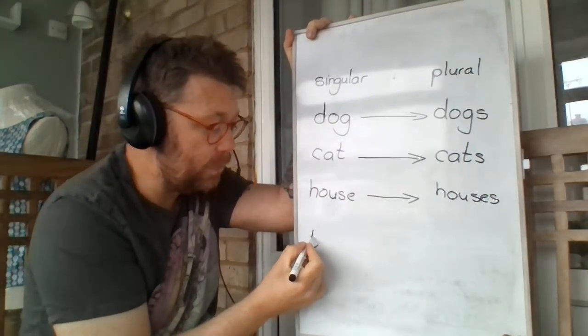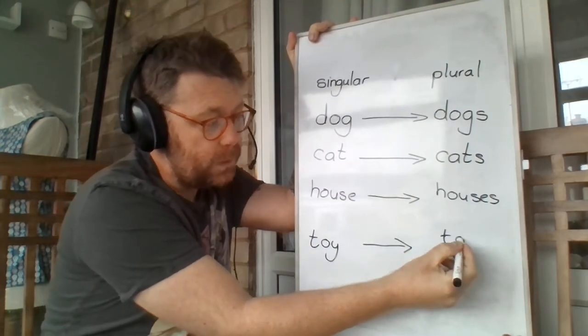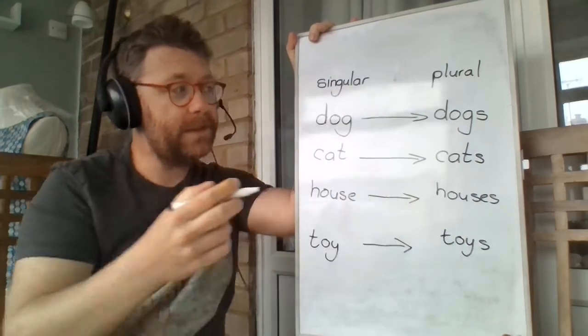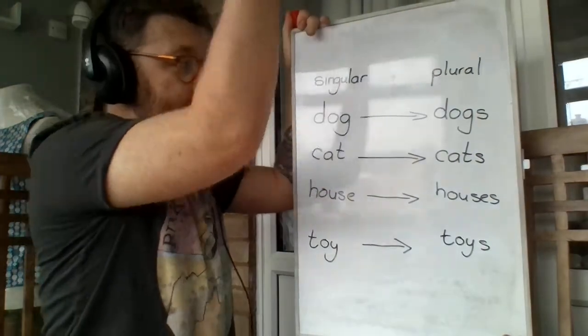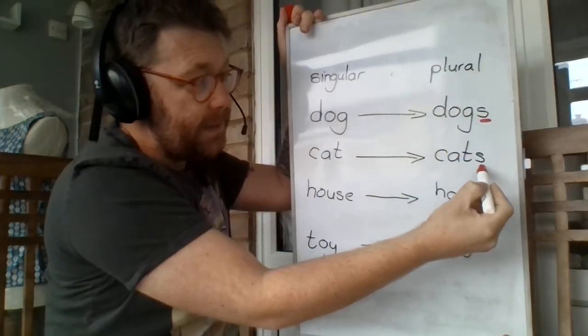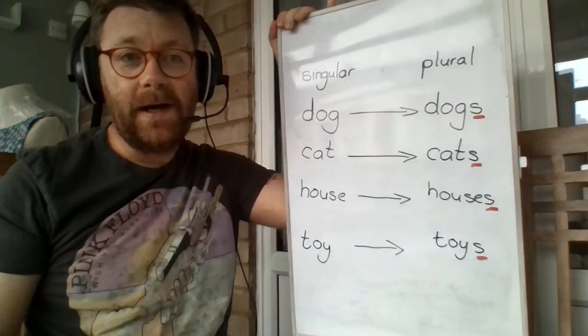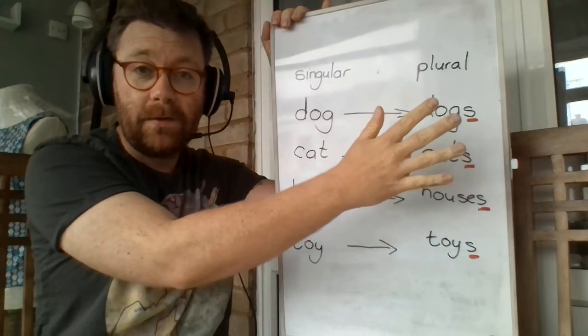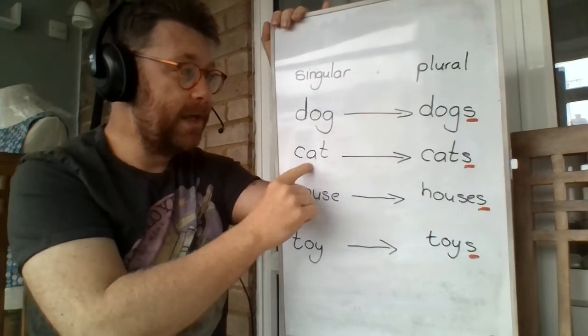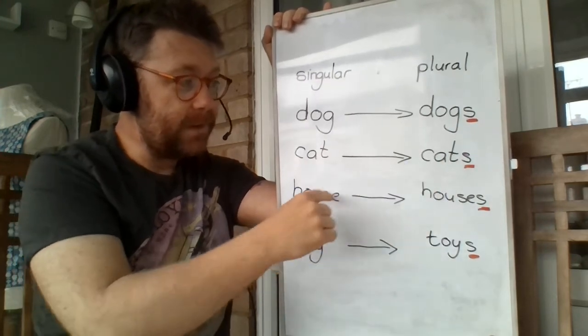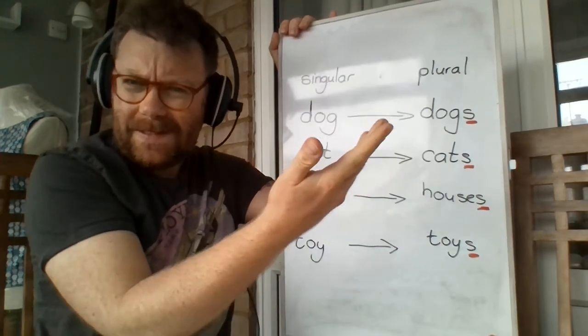And then I've got a toy on the floor. Oh my goodness. Look at all of my toys on the floor. So can you see each time we've just added S? That's the regular way of changing from a singular word to a plural word. One dog, lots of dogs. One cat, lots of cats. One house, lots of houses. One toy, lots of toys. Easy peasy.